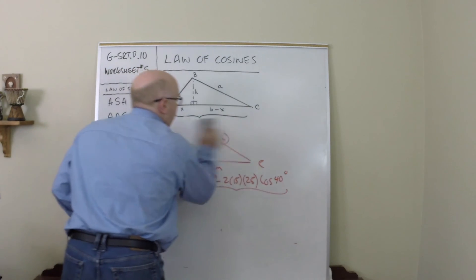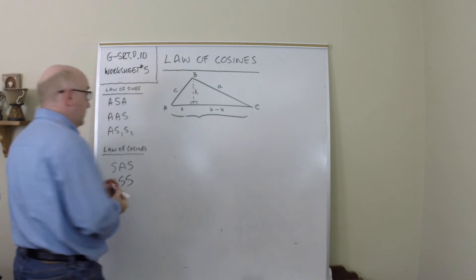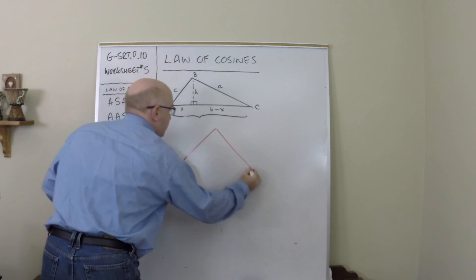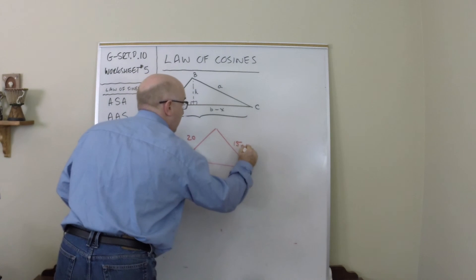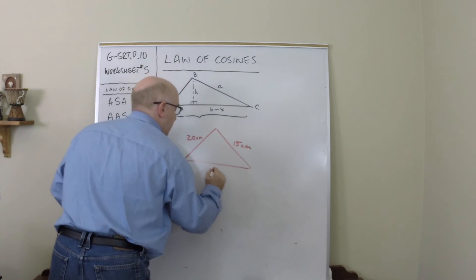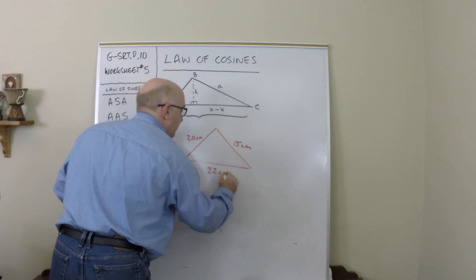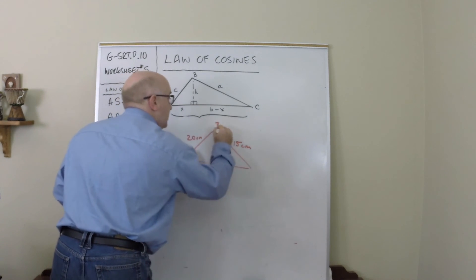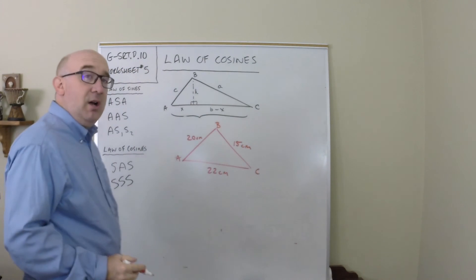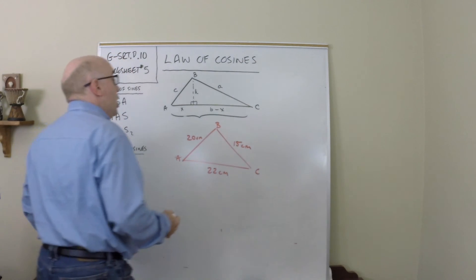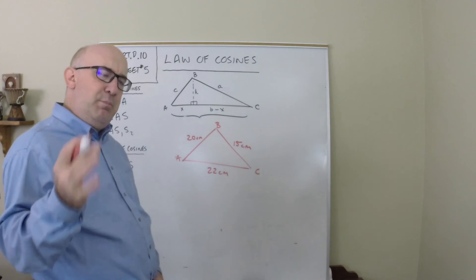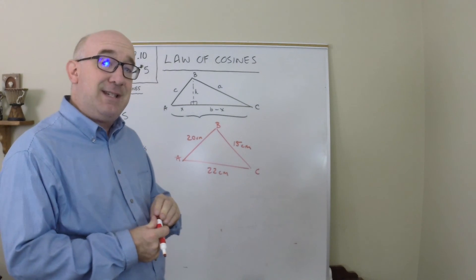Also, if all three sides were given to you, so let's say you had 20 here, 15 here, and 22 here, what you would do is you would use the law of cosines to get this going because you can't use the law of sines. Always solve for the biggest angle when it's side-side-side